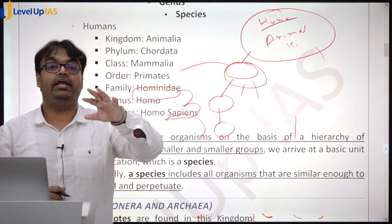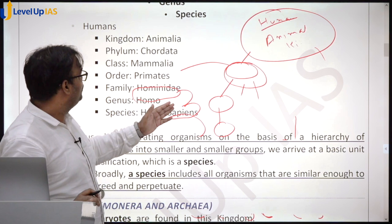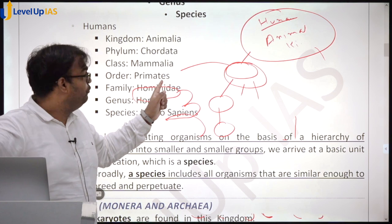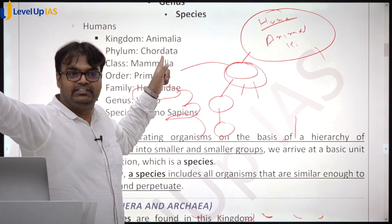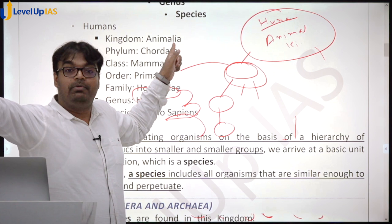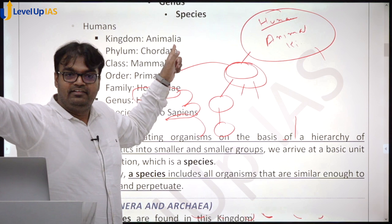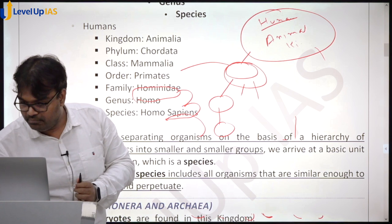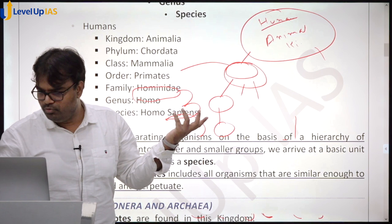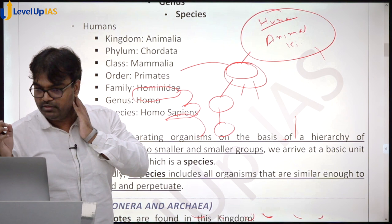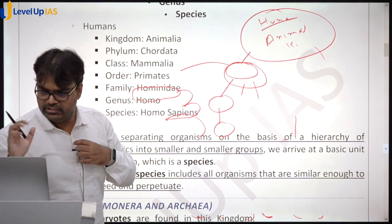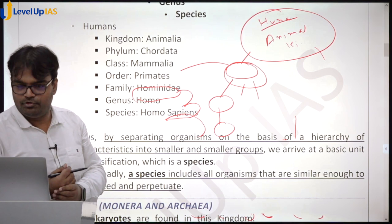Now we understand why through evolution we are closer to monkeys — we are both Primates — than to lions. We are closer to lions because lions are also mammals. We are closer to fish because fish are also Chordata. We are closer to insects than to plants or bacteria. This is how classification and evolution connect.